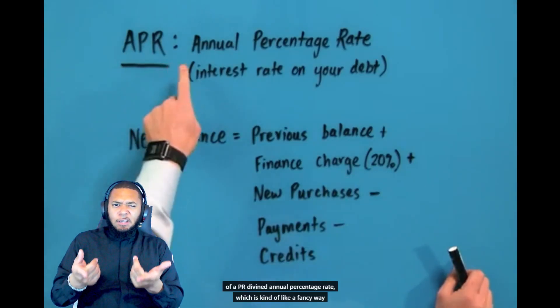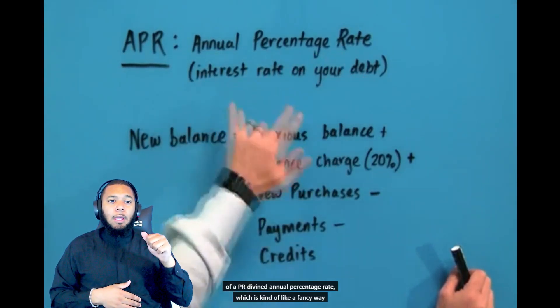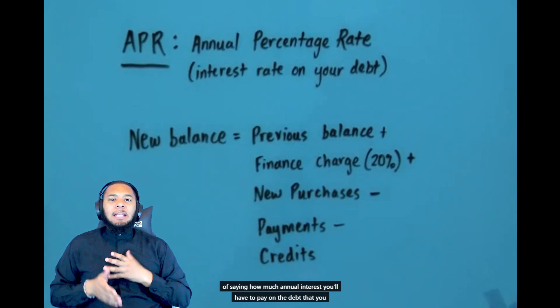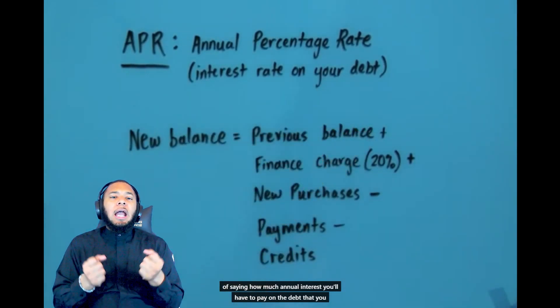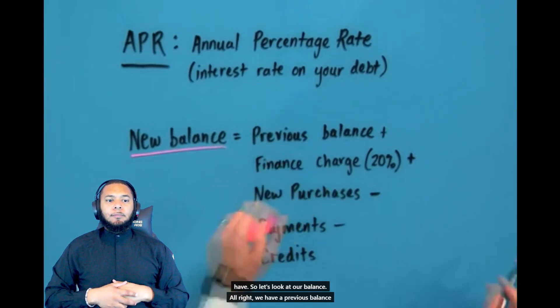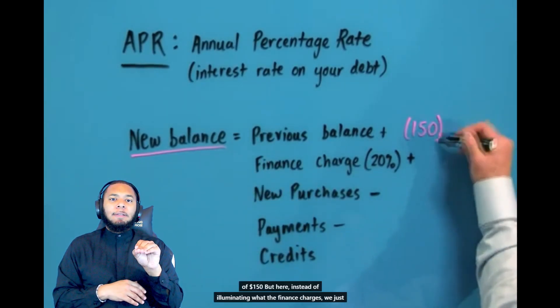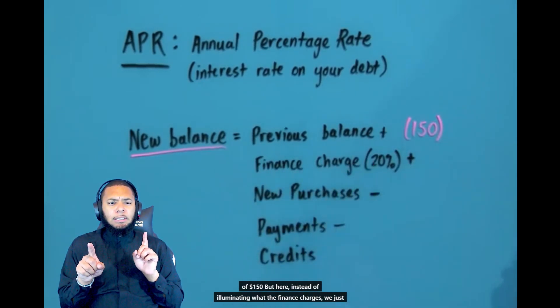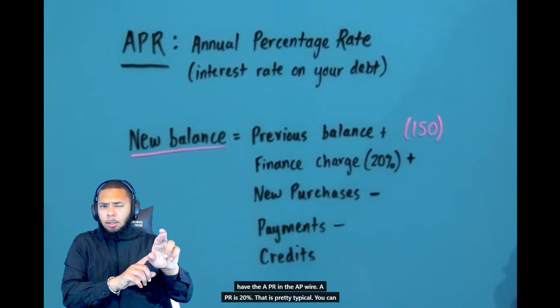So down here on the board, I have APR defined — annual percentage rate — which is kind of like a fancy way of saying how much annual interest you'll have to pay on the debt that you have. We have a previous balance of $150, and instead of showing the finance charge directly, we just have the APR, and the APR is 20%. That is pretty typical. You can have introductory periods where the APR is 0% for six months — spend as much as you want and they won't charge you any finance charges — but then at the end of that honeymoon period, it pops right back up to somewhere around 20%.